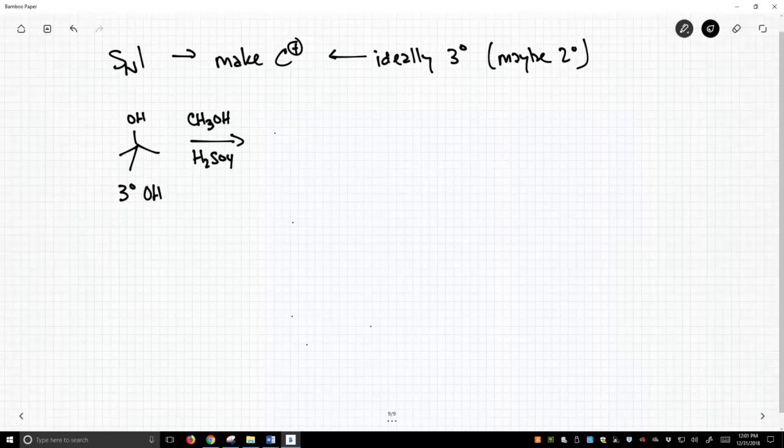Now if you mix methanol and sulfuric acid, you don't have sulfuric acid anymore. The flask gets very hot, and what you actually have is protonated methanol. So we're actually going to start with protonated methanol, because that's what forms when you mix sulfuric acid and methanol.